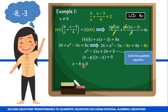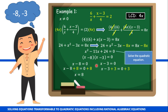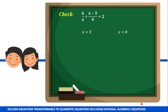First, x minus 8 is equal to 0. Using the addition property, we add 8 to both sides: x is equal to 8. Next, x minus 3 is equal to 0. We add 3 to both sides: x is equal to 3. We now have two values of x — 3 and 8 — and we have to check whether they are roots of our original equation.